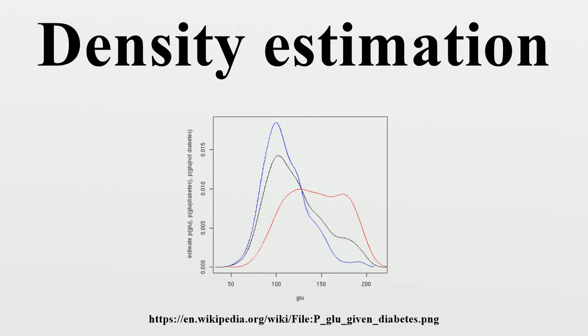Note that the above conditional density estimator uses bandwidths that are optimal for unconditional densities. Alternatively one could use the method of Hall, Racine, and Li, and the np package for automatic bandwidth selection that is optimal for conditional density estimates. See the np vignette for an introduction to the np package.